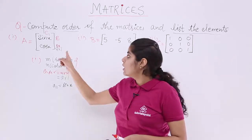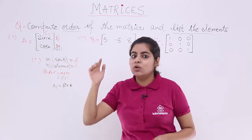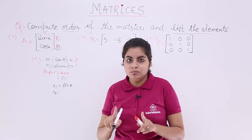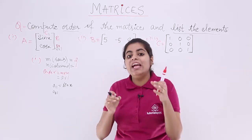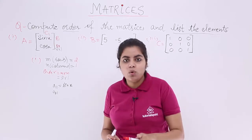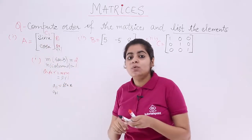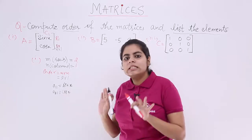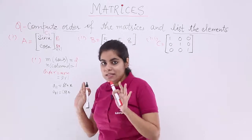Again, row 2 and C1. So second row, first column means A21, not A12. A12 means first row, second column. A21 means second row, first column. Always write row first. So second row, first column is cos x. This is how you list it. First part is done.